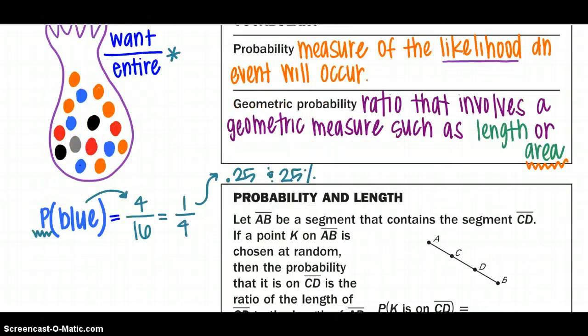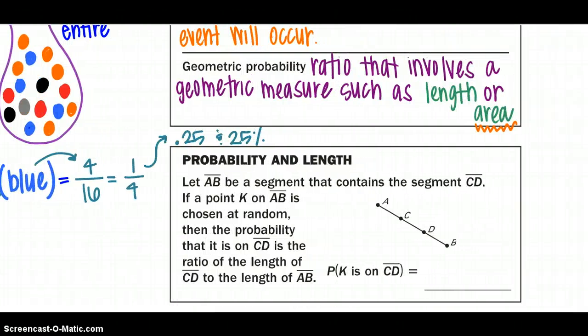So transitioning into the probability using lengths, we're going to let AB be our entire segment that contains our segment CD. If we would happen to pull point K off of AB chosen at random, we want to find the ratio of the length of CD to the length of AB. And we want that point K to fall on CD. So what's the probability that that will happen?